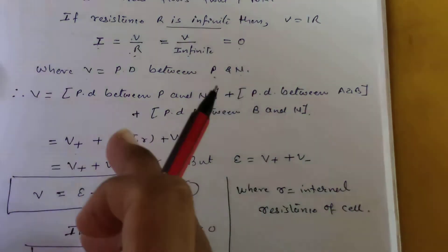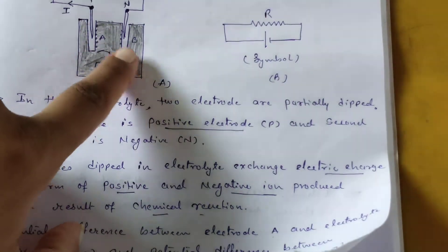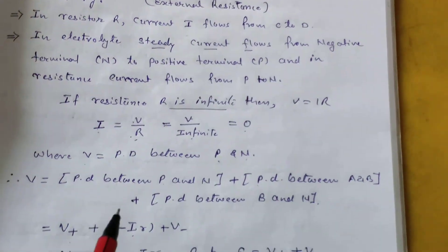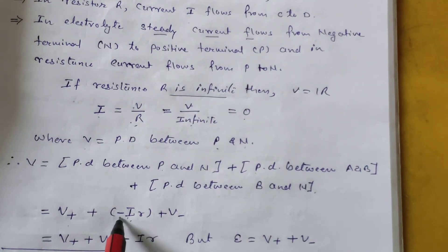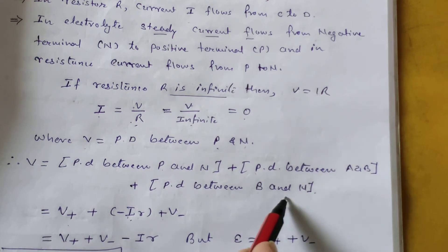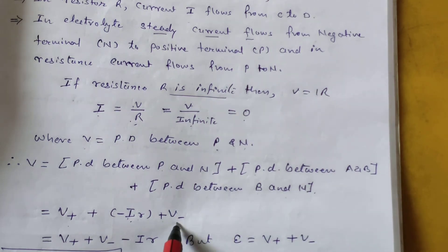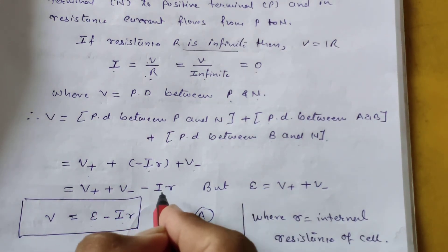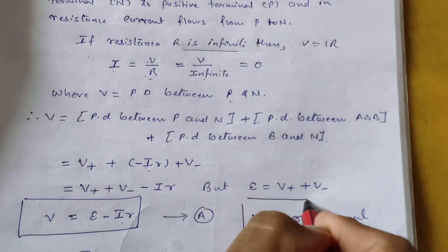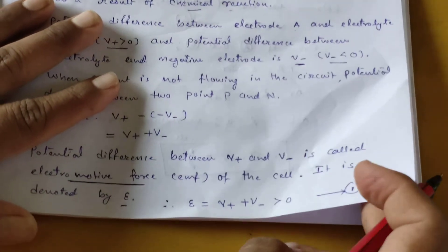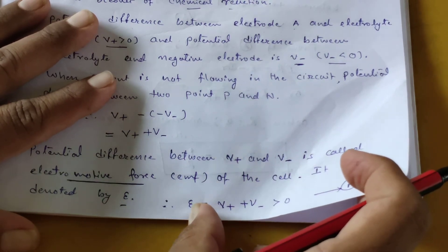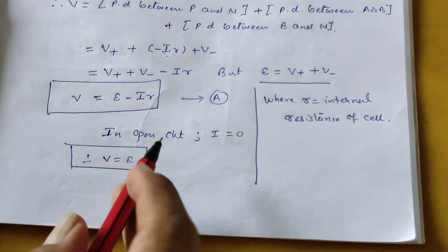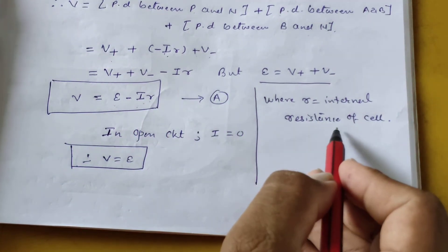Between A and B we apply Ohm's law: V = IR, with internal resistance denoted by small r. So we have V = V+ minus Ir plus V−. Sorting this out gives V = V+ + V− − Ir. Since epsilon = V+ + V−, we get V = epsilon − Ir, where small r equals the internal resistance of the electrolyte.